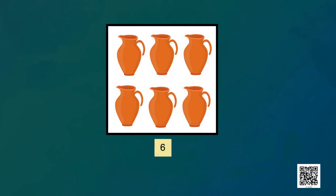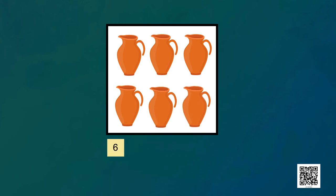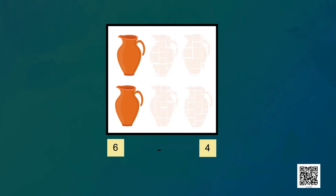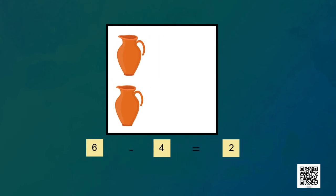Look children, here we have some jugs. How many jugs are there? Let's check — one, two, three, four, five, six. Yes, six jugs. Six minus four — four jugs have been subtracted because they were broken, so it is right to take them away. How many jugs are left? One, two. Six minus four is equal to two. Now we will have to do it on our own.